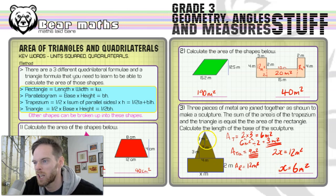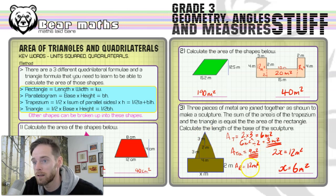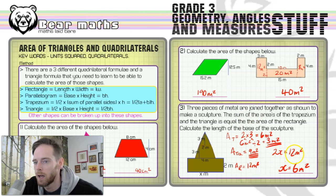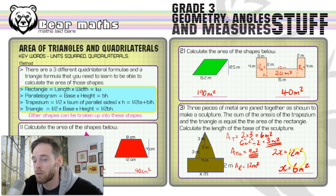To recap: work out the area of the triangle — don't forget to halve it after multiplying the two lengths. Work out the area of the trapezium. Add both areas to get the area of the rectangle, as stated in the question. Then form the simple equation 2x = 12 and divide both sides by 2. You could also just think: something times 2 makes 12.